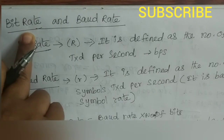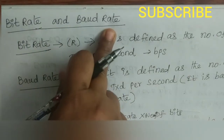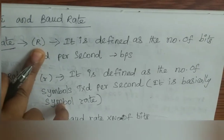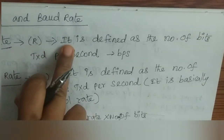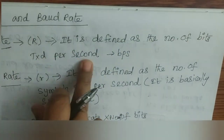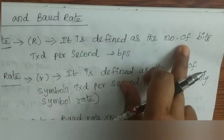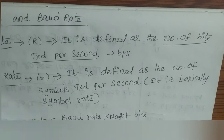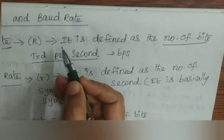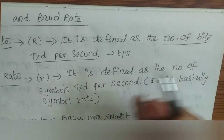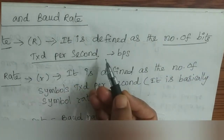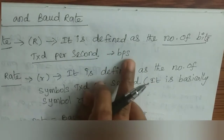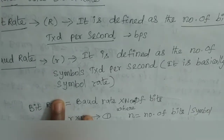We see the definition of bit rate and baud rate. Bit rate is usually denoted by the letter capital R. It is defined as the number of bits transmitted per second, expressed as BPS, which stands for bits per second. This is bit rate.